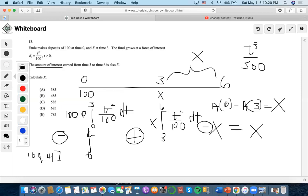For the accumulation at 6, we do 6 cubed divided by 100, which is 2.16. e to the 2.16 is 8.67 times 100, and we get 205.44.